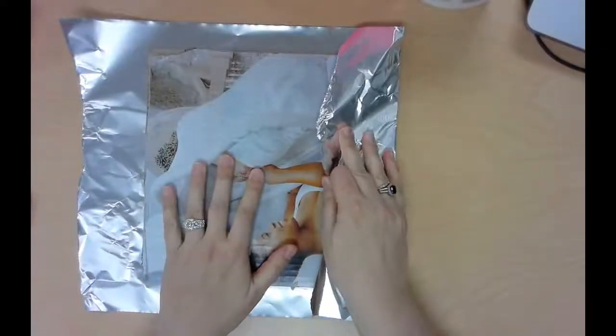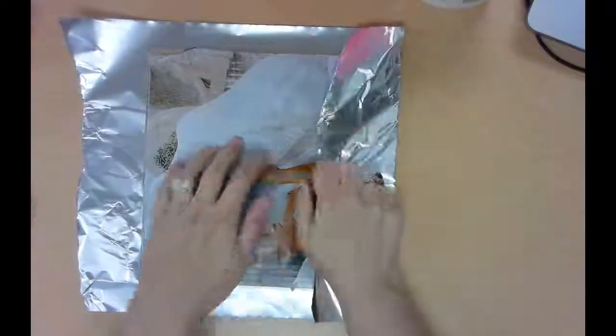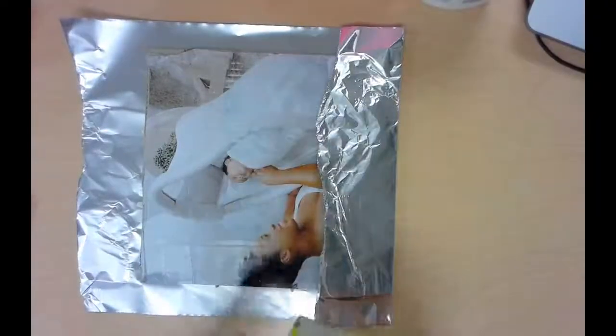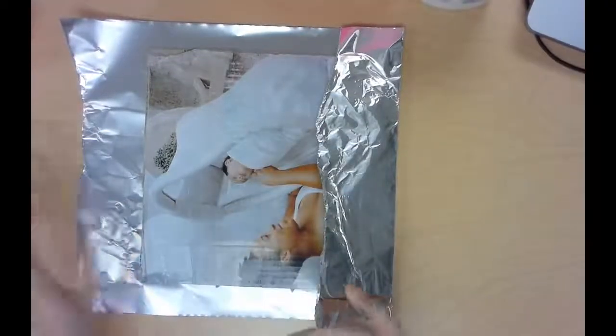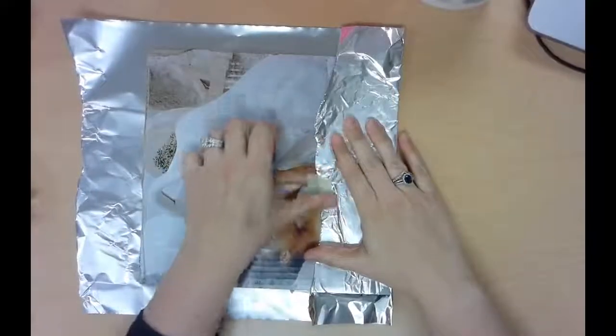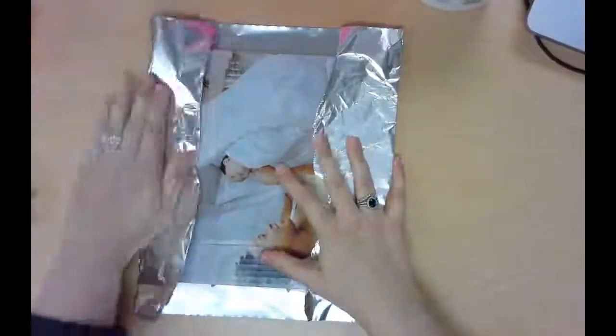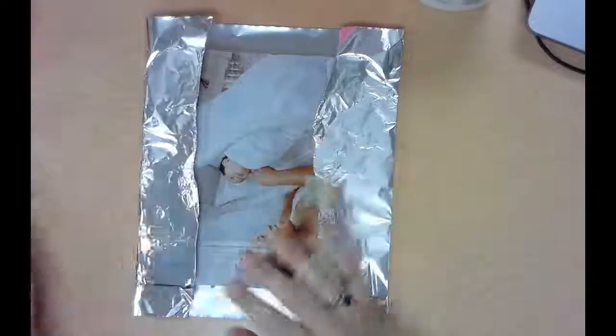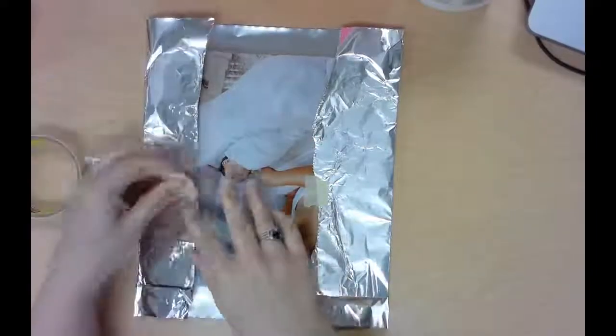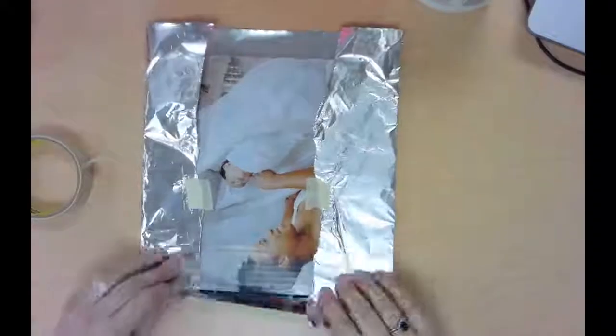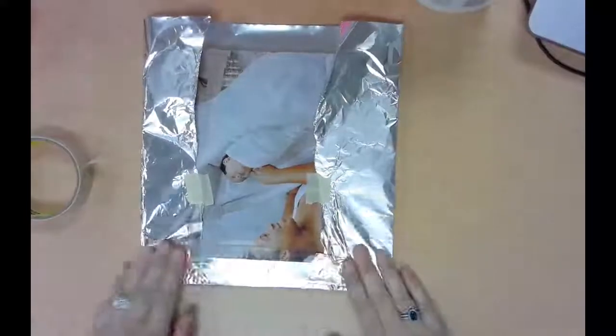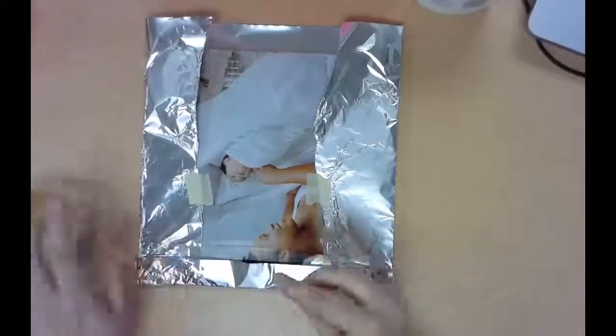Then you're going to fold over your tin foil as tight as you possibly can. As tight as you can and you're going to tape it down. So I like to do the sides first and I'm pulling it as tight as I can get it. And then I'm going to do the top. And then I'm going to do the bottom.